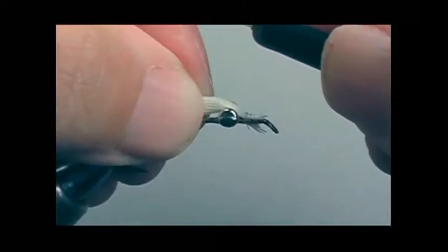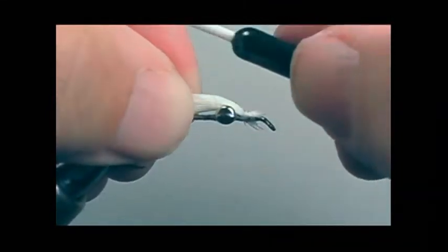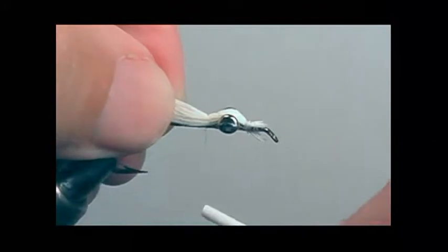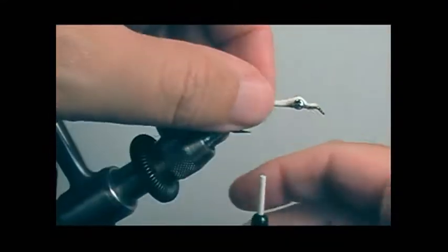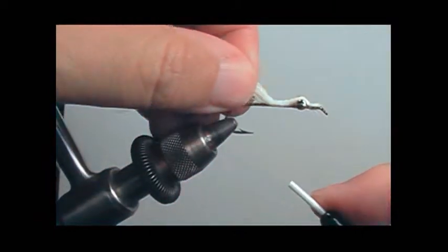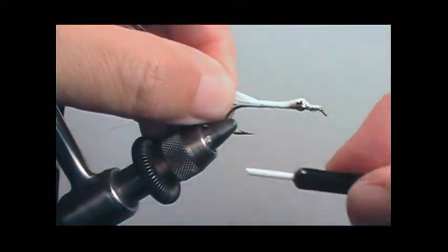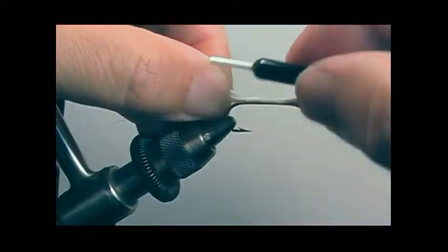What we do is wrap over the bucktail and pull up, then we'll go to behind the dumbbell eyes and pull the bucktail up and wrap the thread to secure it to the shank of the hook.